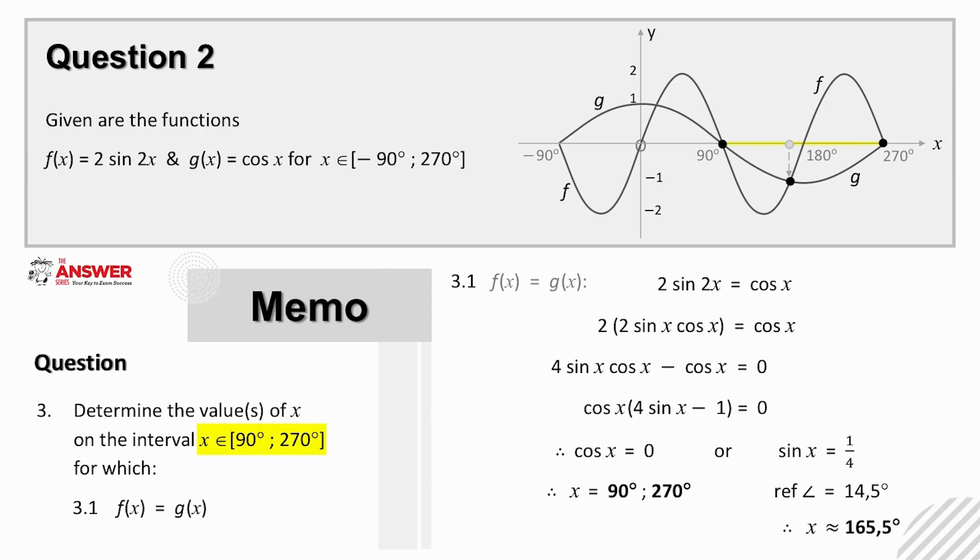The third part of this question has two parts to it. The first is asking us where f is equal to g, in other words, where the two graphs intersect each other. The interval they are focusing on here is between and including 90 and 270 degrees. So for 3.1, let's put the equations of the two graphs equal to each other and then apply the sine double angle expansion here. By multiplying out the bracket and taking all terms to the left hand side, we have a situation where we can factorize using common factor.